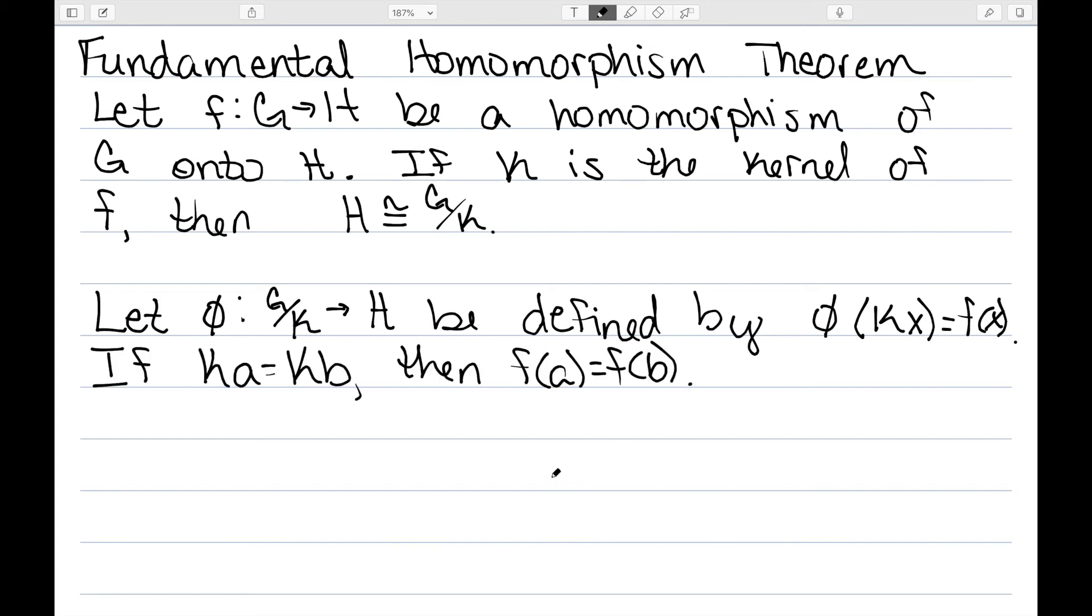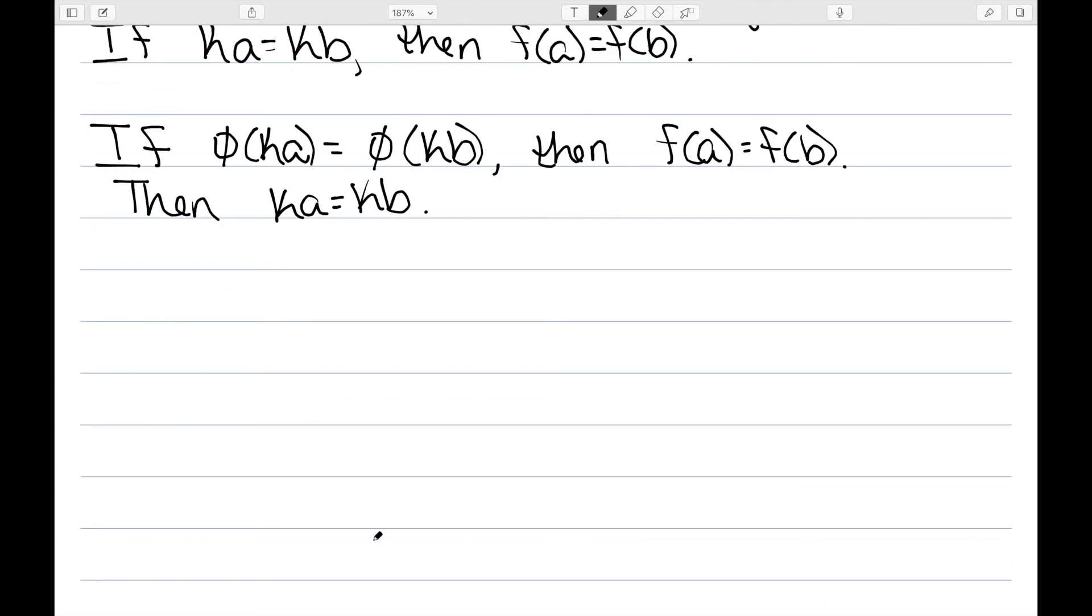In other words, we need to show that if KA is equal to KB, then F(A) is equal to F(B). But that's in fact true by the theorem that I proved earlier in this video. Now that we have this function well defined, we need to show it's an isomorphism. Let's start by showing it's injective. Well, to show it's injective, we have phi(KA) equal to phi(KB). That implies that F(A) is equal to F(B) by definition of phi. And the theorem that I proved earlier in this video said that if F(A) is equal to F(B), then KA is equal to KB, since that was an if and only if theorem. Therefore, we do have that this function phi is injective.